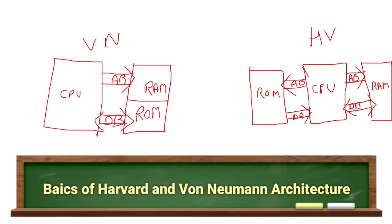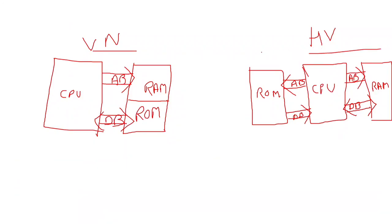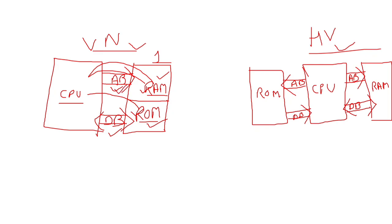Any microcontroller either supports von Neumann or Harvard architecture. Von Neumann was invented first, then Harvard. In von Neumann architecture, both RAM and ROM — data memory and code memory — are provided on a single chip with a common address bus and common data bus. This means whenever the CPU is fetching code from ROM, it cannot read or write the RAM until the address and data buses are free. So the access time of the CPU is greater compared to Harvard architecture.